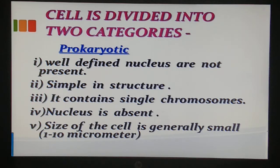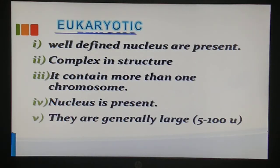Prokaryotes are simple in structure, contain a single chromosome, and the nucleus is absent. 'Pro' means primitive and 'karyon' means nucleus - so a primitive kind of nucleus, but a well-defined nucleus is not present. Eukaryotes are almost the opposite: they have a well-defined nucleus, are complex in nature, contain more than one chromosome, the nucleus is present, and their size is generally large in comparison to prokaryotes.